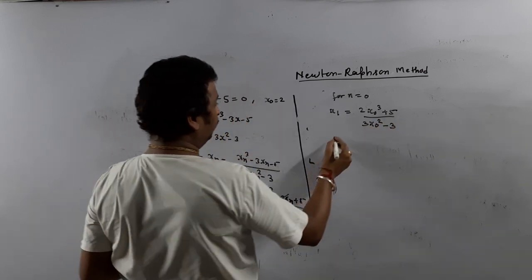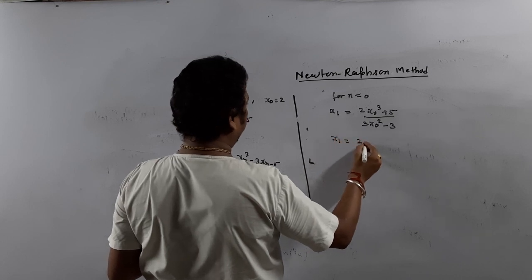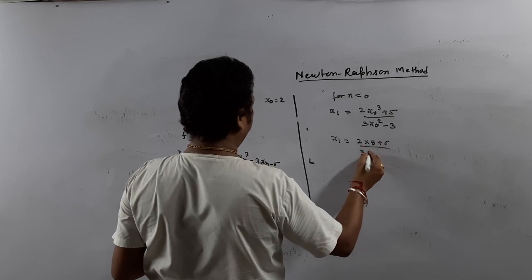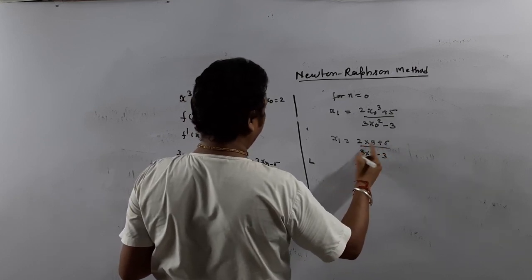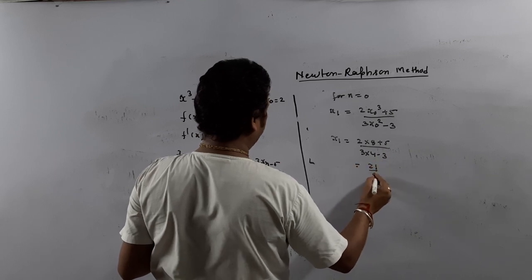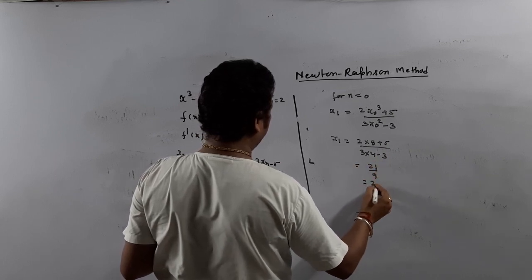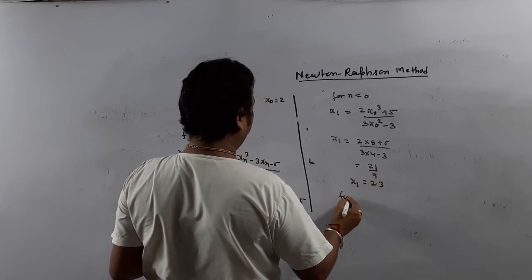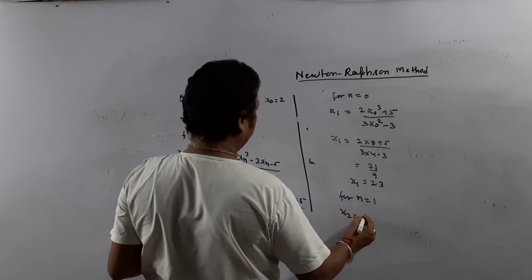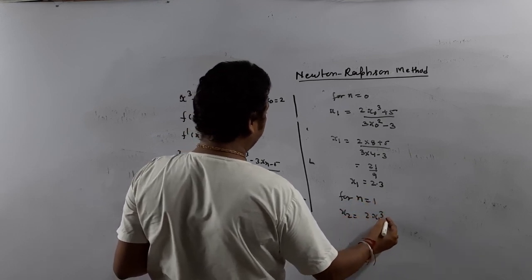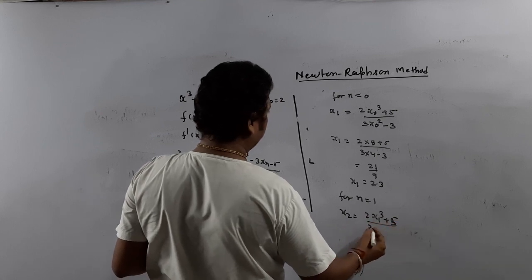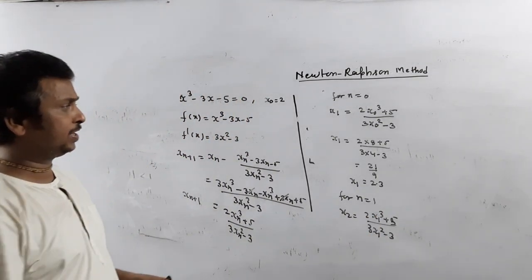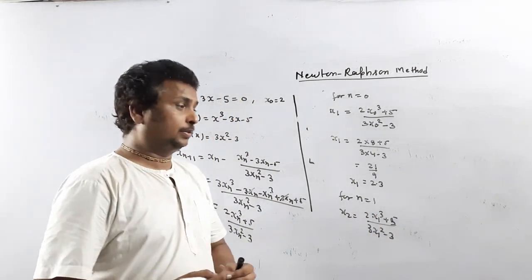Put the value here. x_{n+1} is 2x_n³ plus 5 upon 3x_n² minus 3. Just put x_n value, you will get x_2 and then you will proceed. But this is the way how we solve.